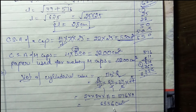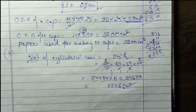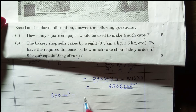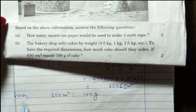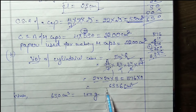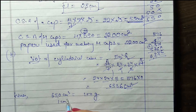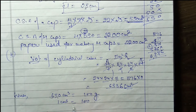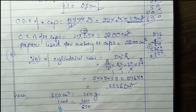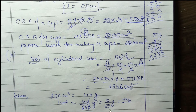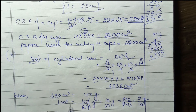Volume hai toh cm³ aayega. Har ek measurement cm mein given hai, that's why cm³ likha. Ab humein malum hai 650 cm³ = 100 gram. Toh 1 cm³ = 100/650 gram = 10/65 gram. Aage bhi cancel kar sakte hain: 10 = 5×2, 65 = 5×13. 5 cancel, toh 1 cm³ = 2/13 gram.